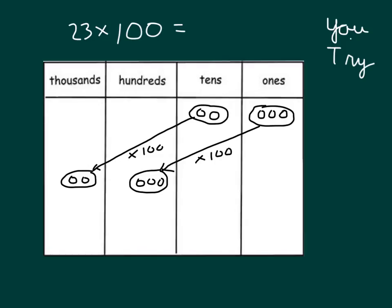So our new number is 2,300, which we write as 2300. And we place our comma. Can you read this whole equation with me? 23 times 100 equals 2,300. Check over your work.